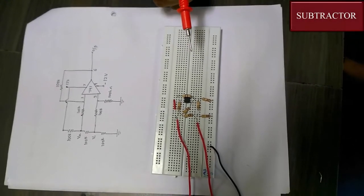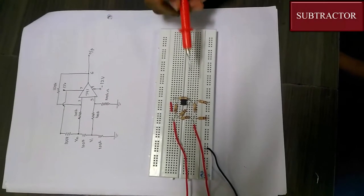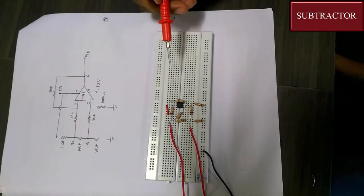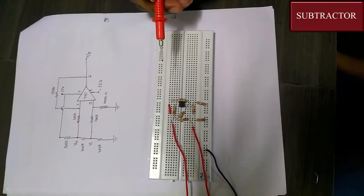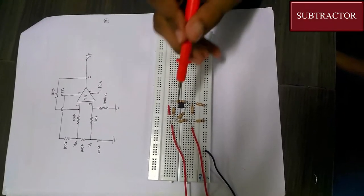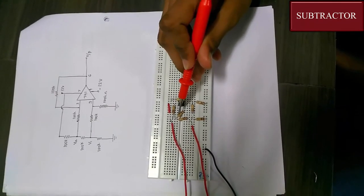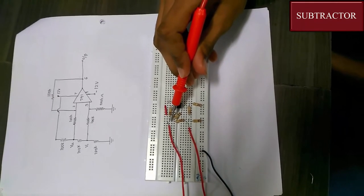Let us look into the implementation of the subtractor on the breadboard. Here we know that the first, eighth, and fifth pins of the op-amp are not connected.